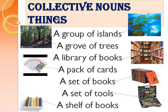Here you can see collective nouns for things. A group of islands — island is singular, islands is plural, so a group of islands. A group of trees — trees making a dense, shady, cool area, so a group of trees. You go to a library — a library of books. A pack of cards — many packs can be there, one pack has many cards. Pack is a collective noun. Library is a collective noun. Grove is a collective noun. Group of islands is a collective noun.